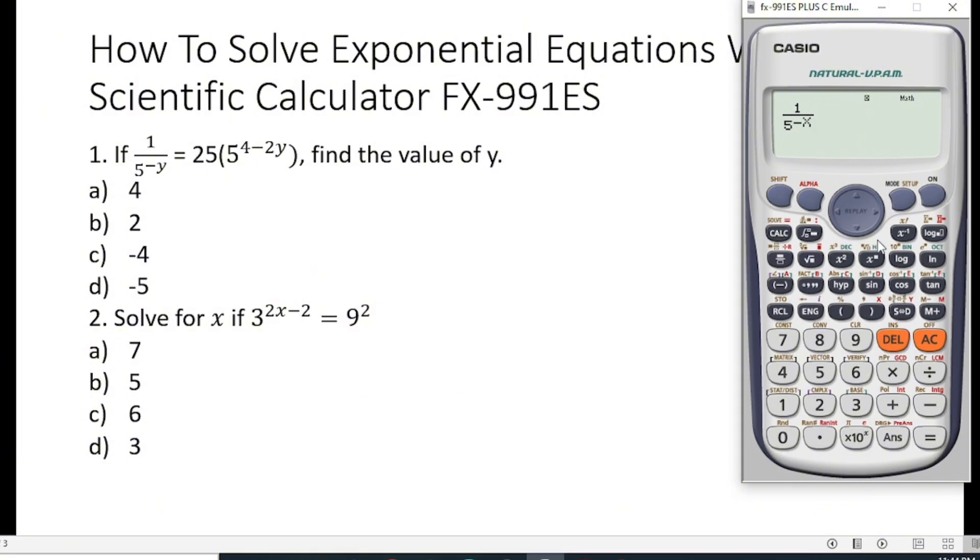So negative x is equal to 25 brackets open 5 exponents 4 minus 2x. Where we see y, we will put x there. So 2x, then we will close our brackets.